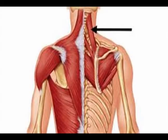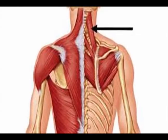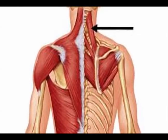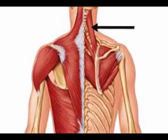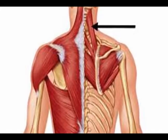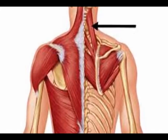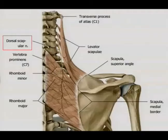The concentric actions of the levator scapula muscle are elevation of the scapula and rotation of the scapula so that the glenoid fossa is tilting inferior.